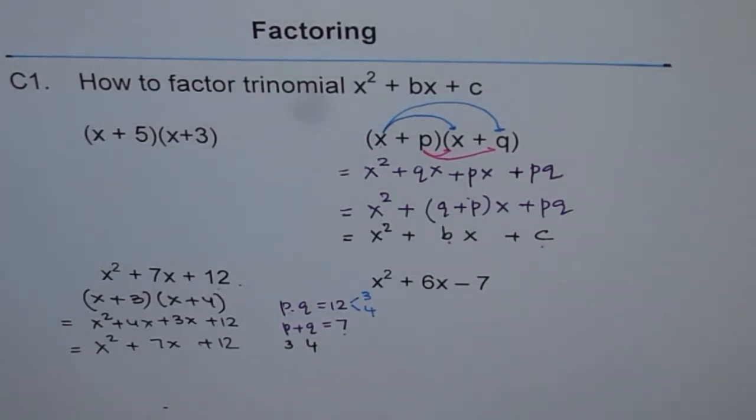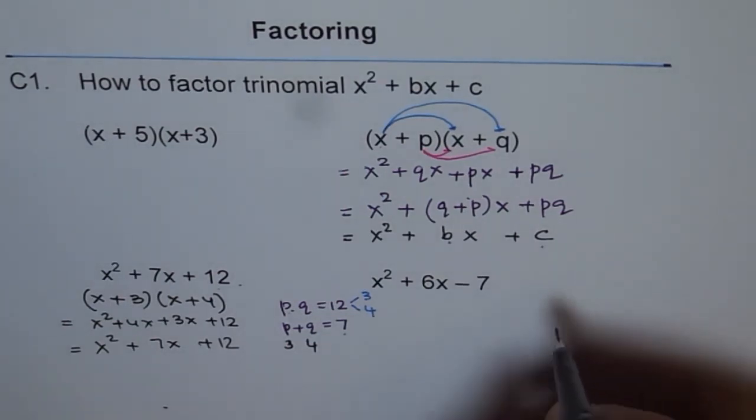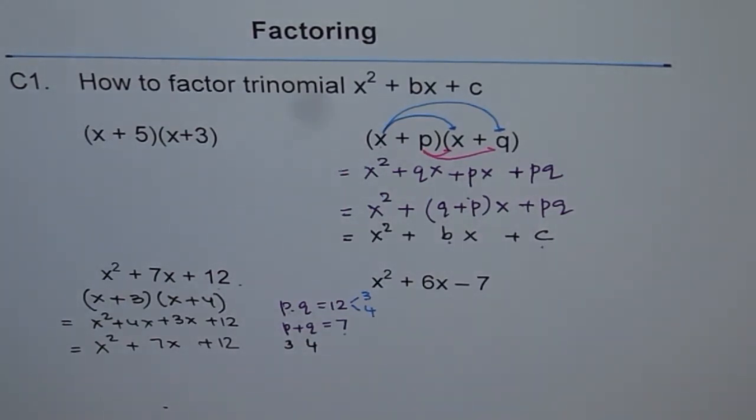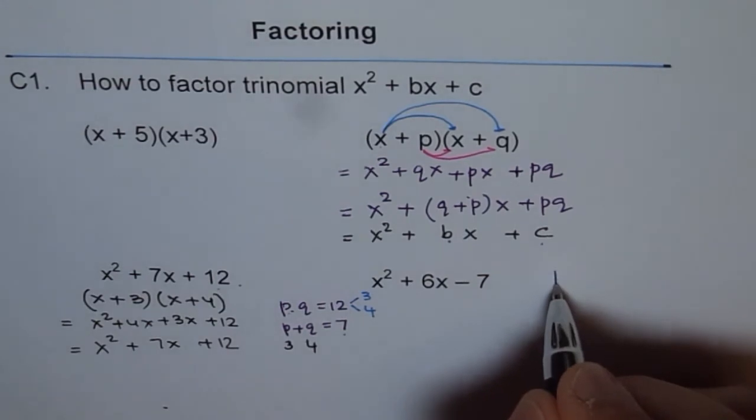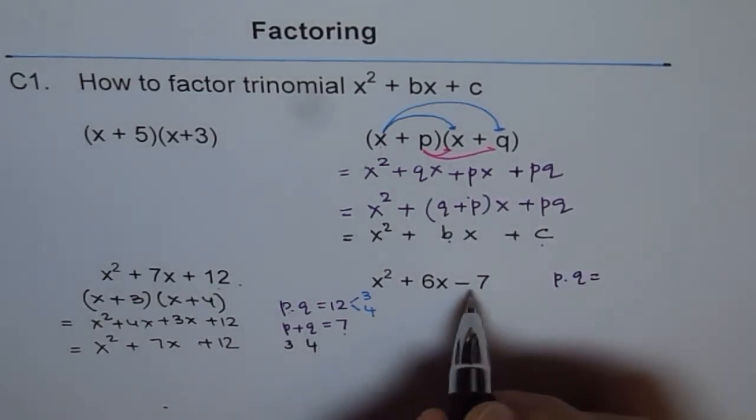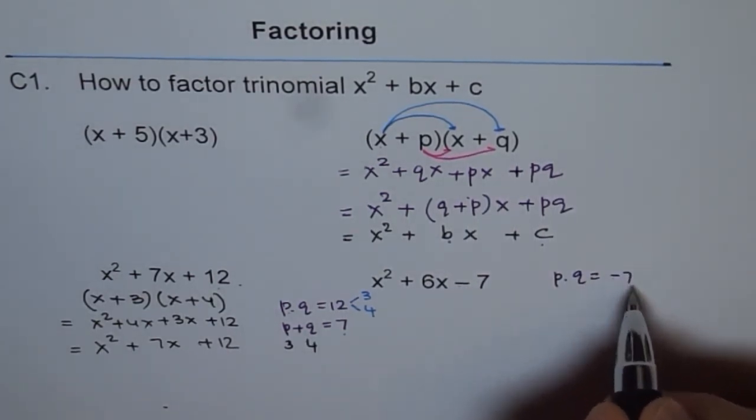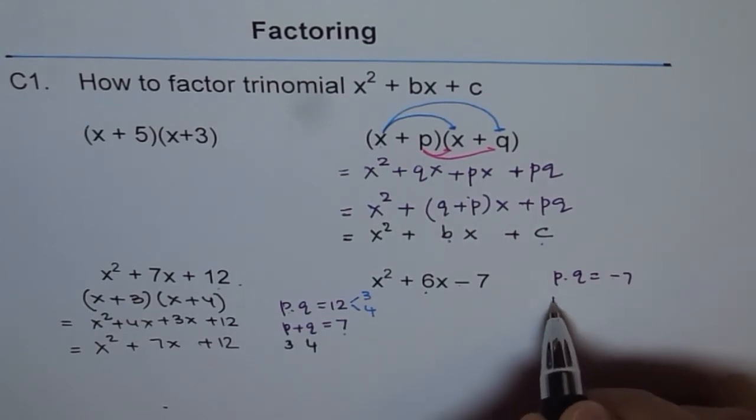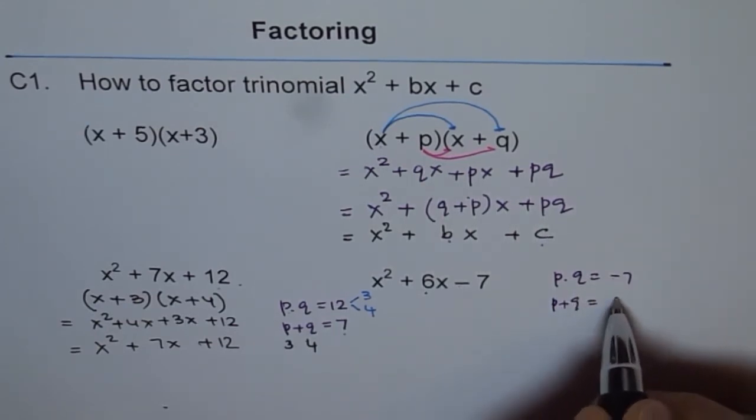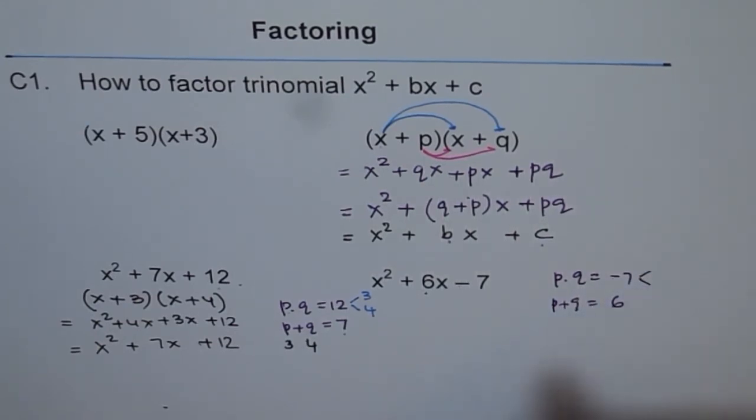Here we have one minus. So we are looking for two numbers. We are looking for two numbers, p and q, whose product should be minus 7 and whose sum should be 6. So p plus q should be equal to 6.